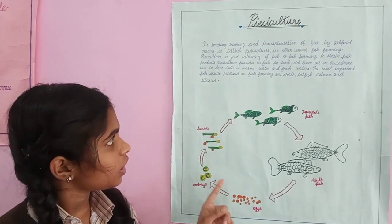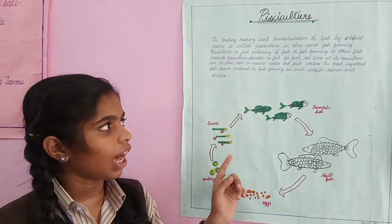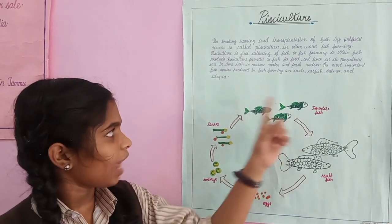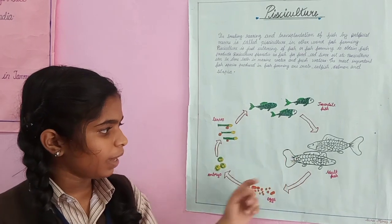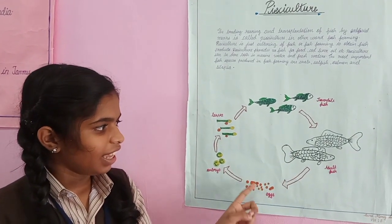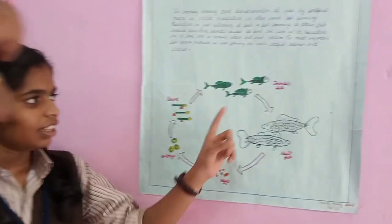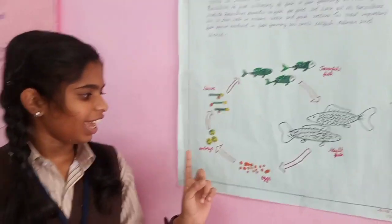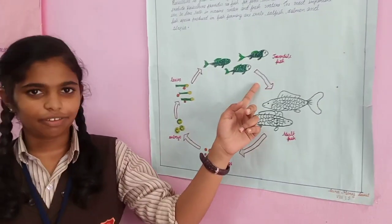The most important species produced in fish farming are crab, catfish, tilapia, and others. The life cycle of fish has five stages: adult fish, eggs, embryo, larva, and juvenile fish.